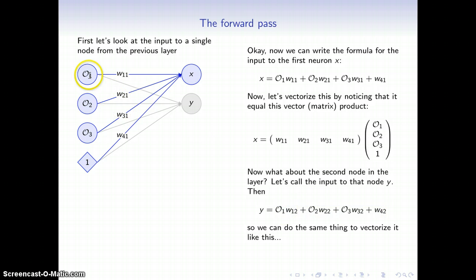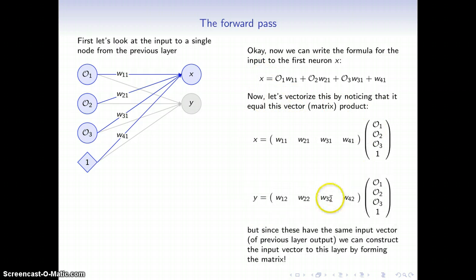They're all multiplied by this same set of outputs, script O1, script O2, script O3, and the one bias neuron. Now obviously, I'm just going to take this y expression and turn it into a matrix product, just like I did here. Except now we have a different set of weights. Instead of one one, two one, three one, four one, we have one two, two two, three two, four two. But they are multiplied by the exact same output vector. And by output vector, I mean the output of the previous layer.